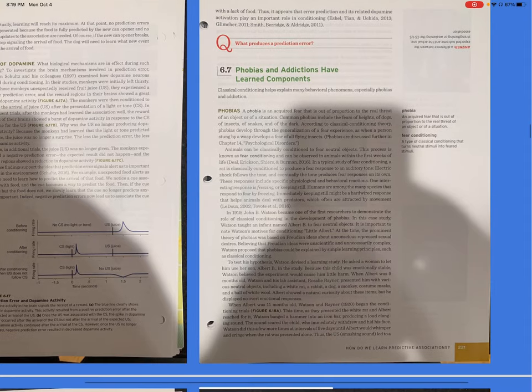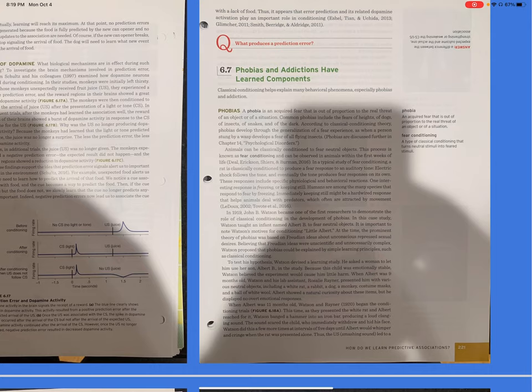Section 6.7: Phobias and addictions have learned components. Classical conditioning helps explain many behavioral phenomena, especially phobias and addiction. Phobias: A phobia is an acquired fear that is out of proportion to the real threat of an object or a situation. Common phobias include the fears of heights, of dogs, of insects, of snakes, and of the dark. According to the classical conditioning theory, a phobia is developed through the generalization of a fear experience, as when a person stung by a wasp develops a fear of all flying insects.